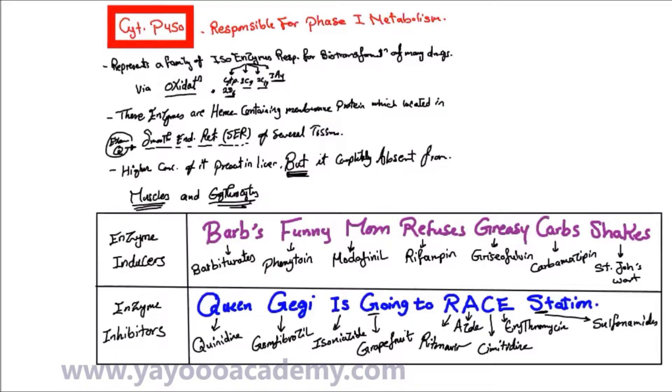So I think it's easier now. Barbs funny mom refuses greasy carbs shake which are inducers: barbiturates, phenytoin, modafenil, rifampin, griseofulvin, carbamazepine, St. John's Wort. And enzyme inhibitors: Queen Gigi is going to Race Station which is quinidine, gemfibrozil, isoniazid, grapefruit, ritonavir, azoles, cimetidine, erythromycin, and sulfonamides.